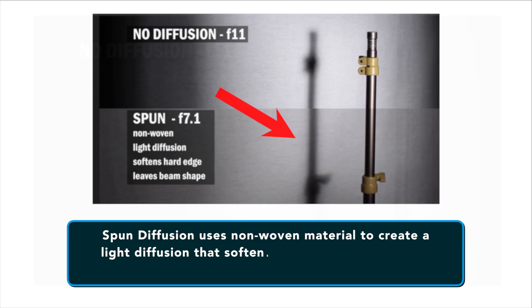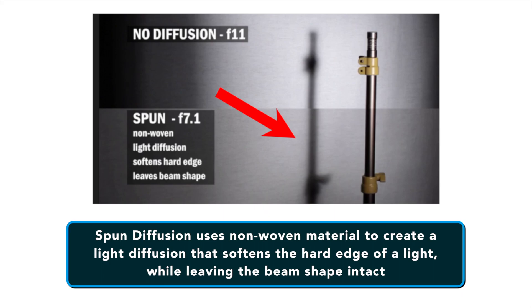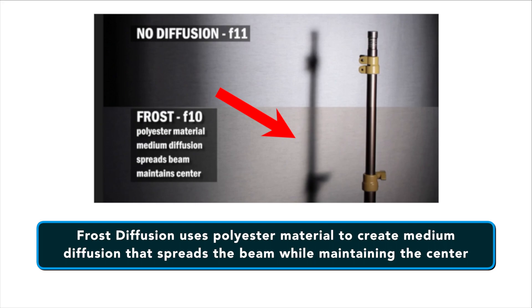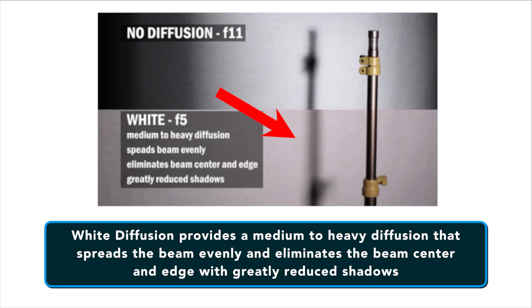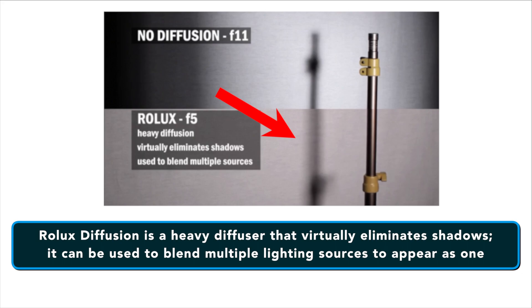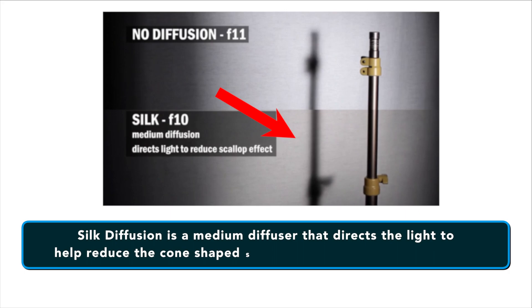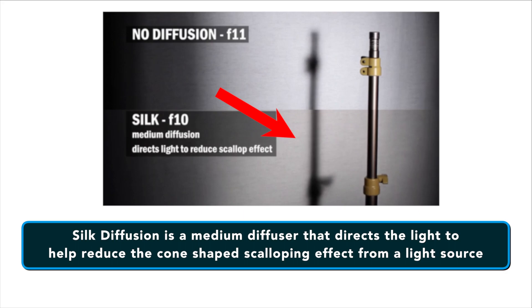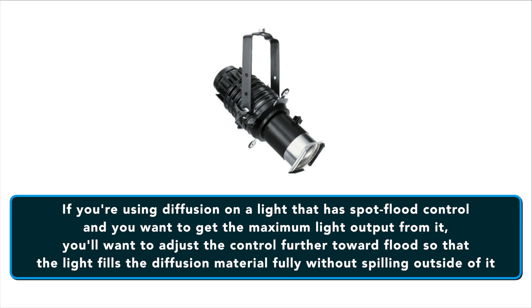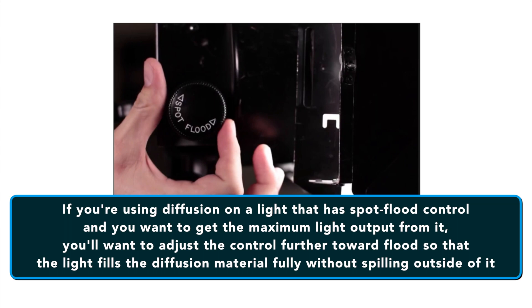Spun diffusion uses non-woven material to soften the hard edge of the light while leaving the beam shape intact. Frost diffusion uses polyester material to create medium diffusion that spreads the beam while maintaining the center. White diffusion provides medium to heavy diffusion that spreads the beam evenly and eliminates the beam center and edge with greatly reduced shadows. Rolex diffusion is a heavier diffuser that virtually eliminates shadows and can blend multiple lighting sources to appear as one. Silk diffusion is a medium diffuser that directs the light to reduce the cone-shaped scalloping effect from a light source. Grid cloth is reinforced diffusion similar to silk, ideal for larger applications. If using diffusion on a light with spot-flood control, adjust the control towards flood so the light fills the diffusion material fully without spilling outside of it.